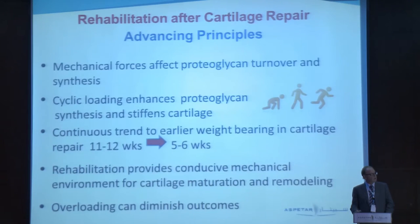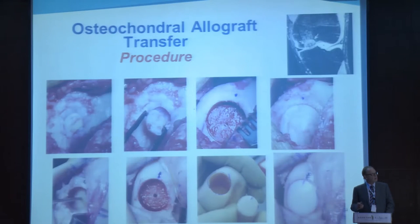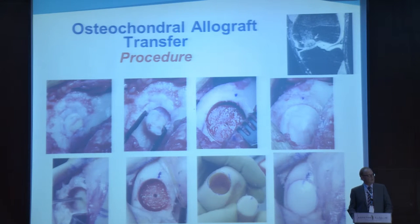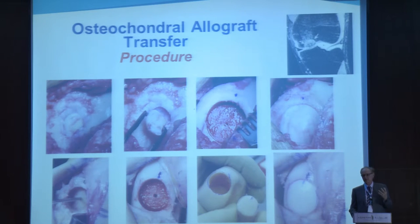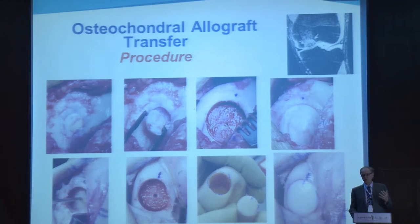One final technique is osteochondral allografts. Here, the entire area is basically tapped out and replaced with an osteoarticular graft from a cadaver — bone and cartilage. You're putting in established tissue, and as you see in the lower right picture, when you're done you've got a whole new cartilage surface. All you need to do is heal the bone.